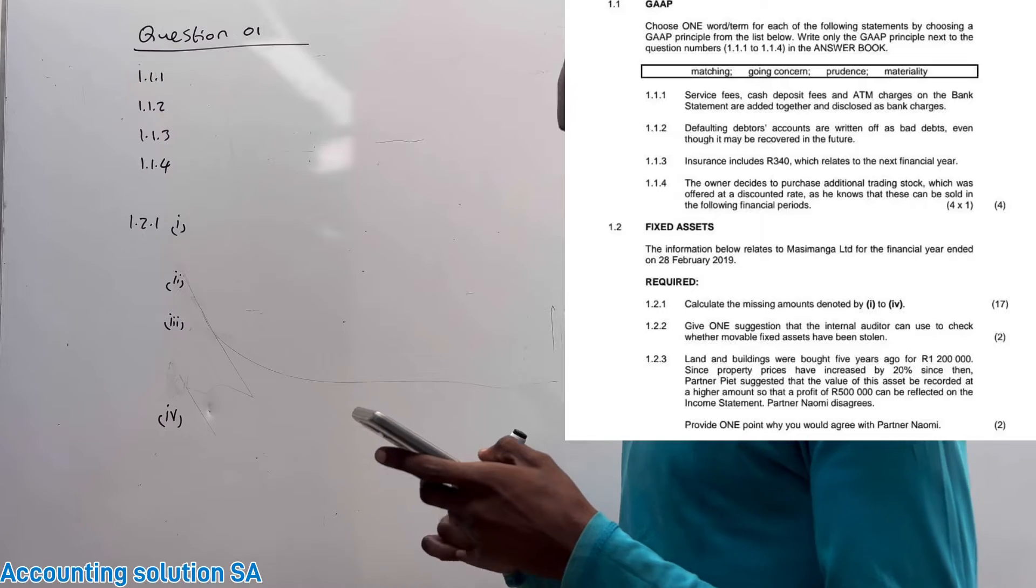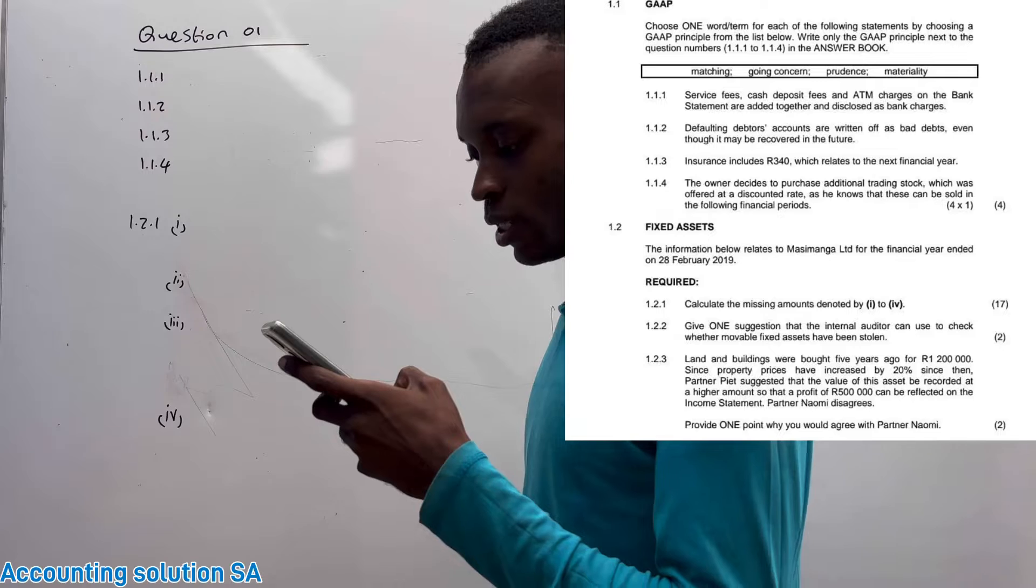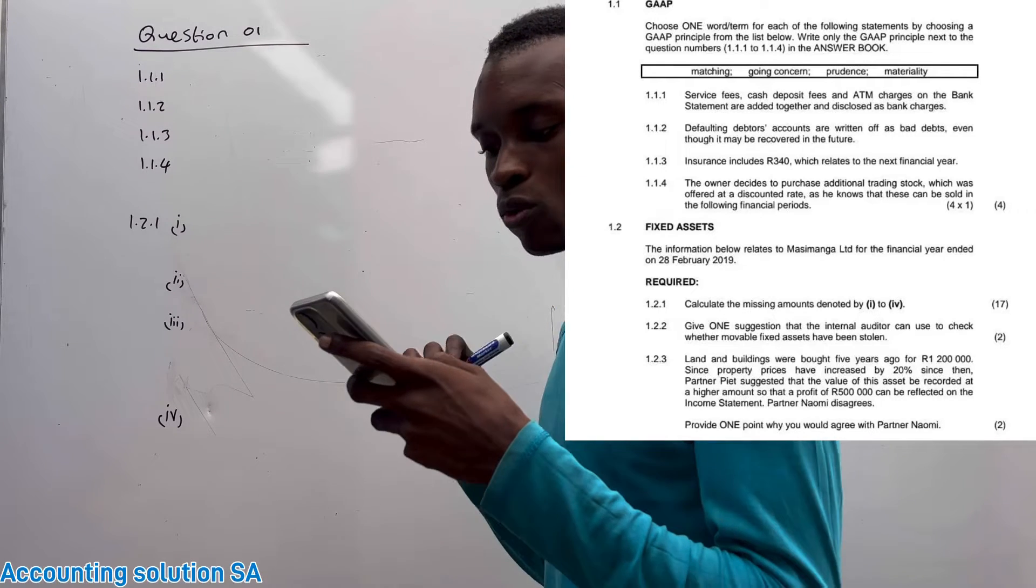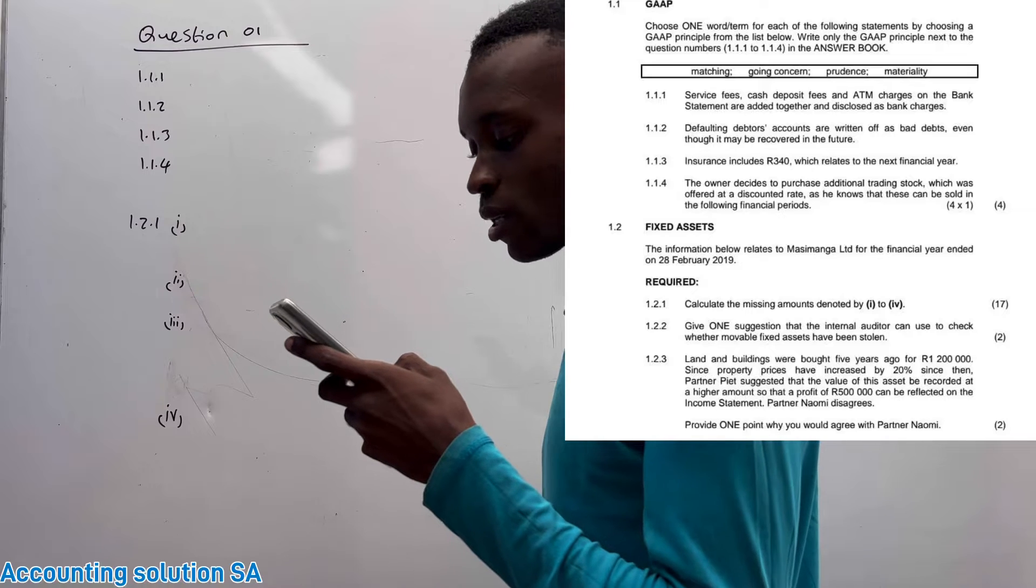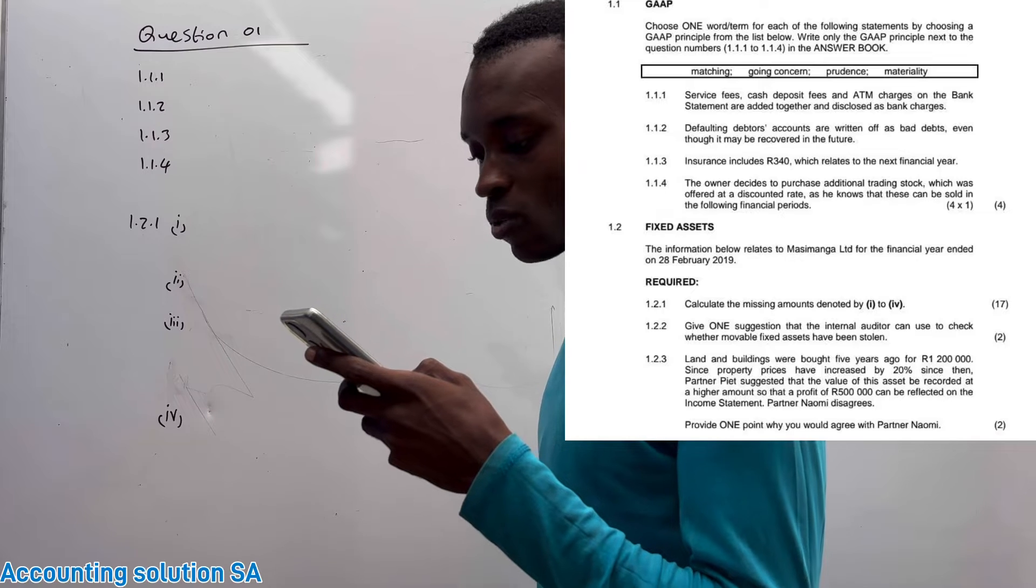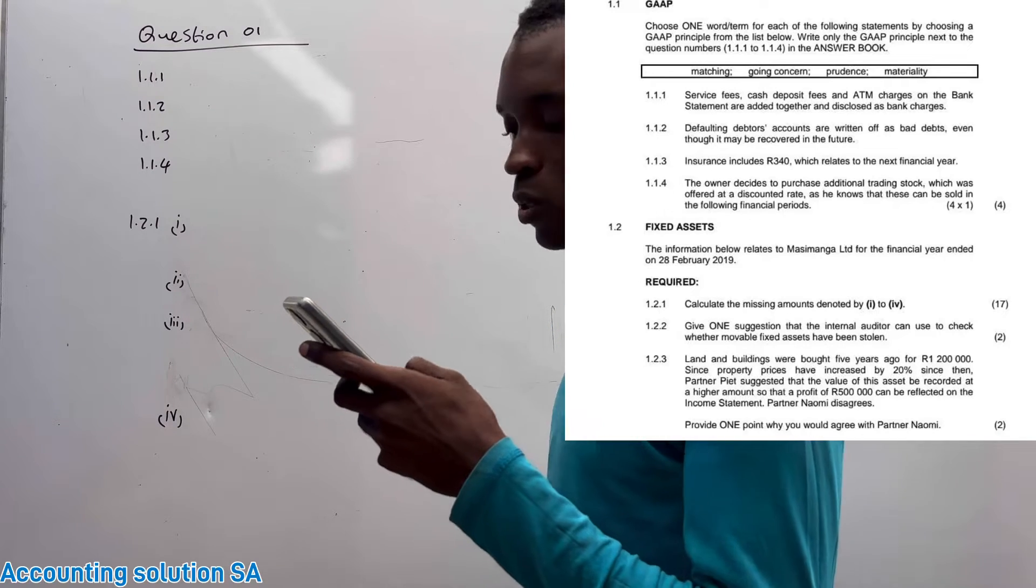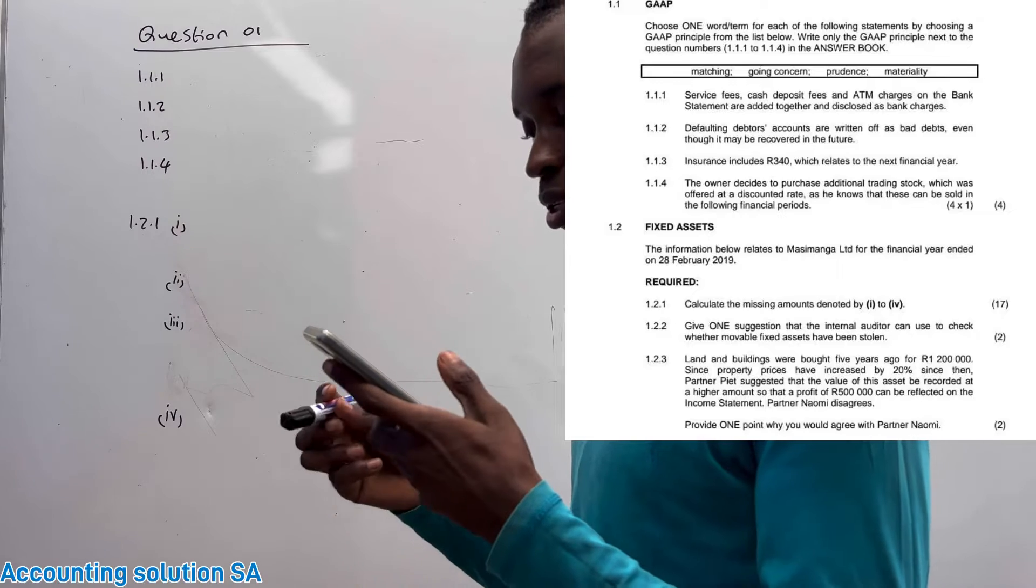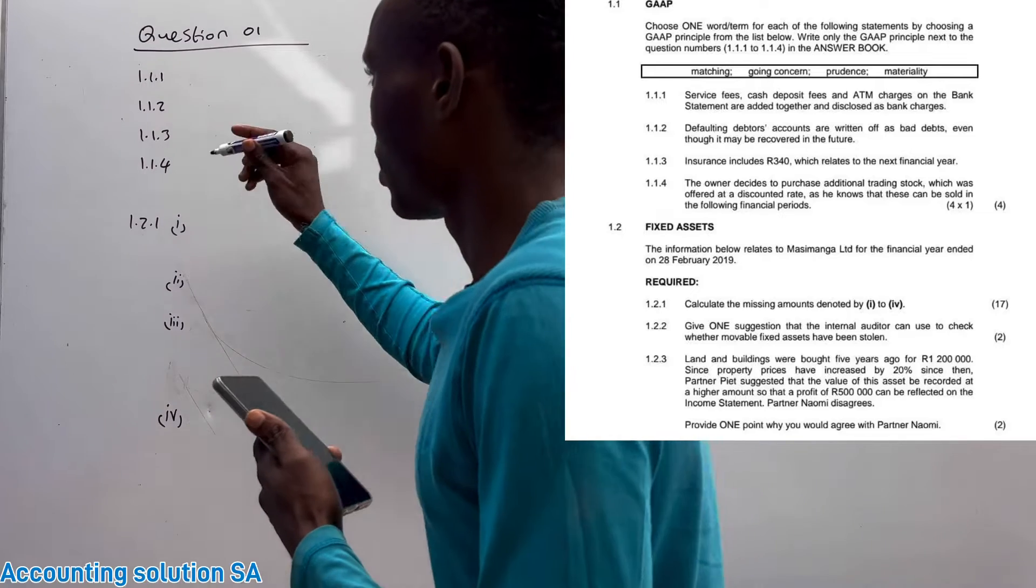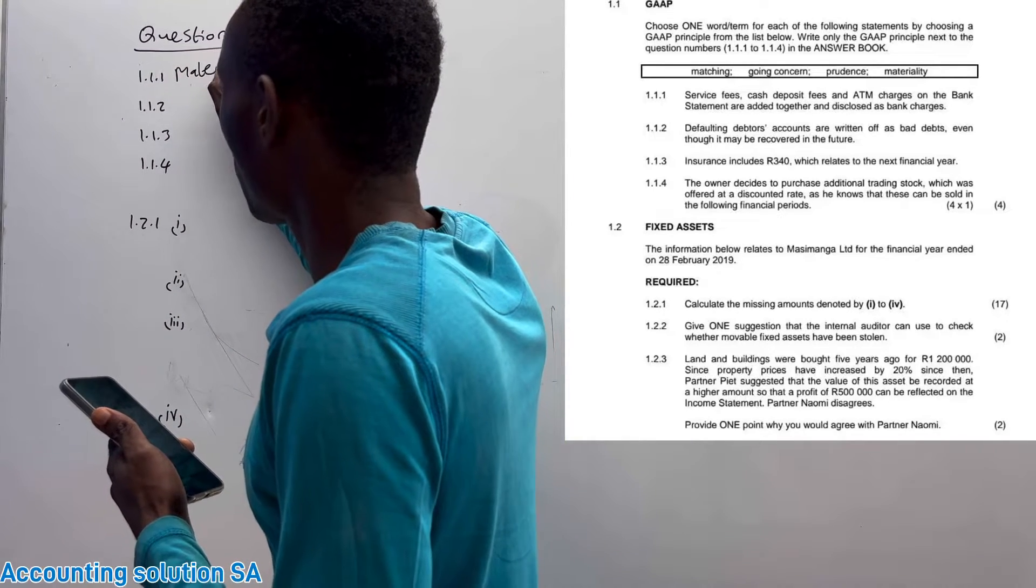We are going to start with GAP principles. We are not going to waste time here because it's just multiple choice. Question 1.1.1: Service fee, cash deposit fee, and ATM charge on the bank statement are added together and disclosed as a bank charge. Which principle is this? This one we need to add them together, so it's materiality.